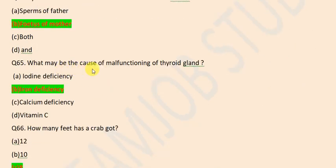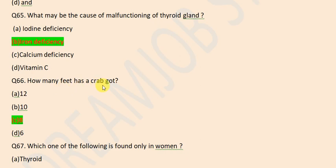What may be the cause of malfunctioning of thyroid glands? It is iodine deficiency. How many feet has a crab got? It is 8.